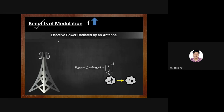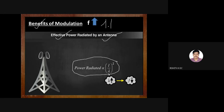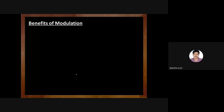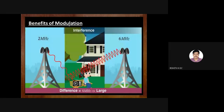Along with the reduction in antenna size, modulation also gives additional benefits. Number one: we radiate more power from the antenna. Power radiated is inversely proportional to λ, so when modulation increases frequency, λ decreases, and power radiated increases. Modulation increases the antenna's capacity to radiate more power.